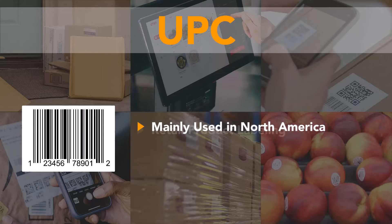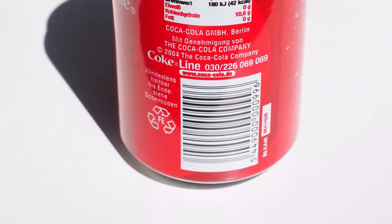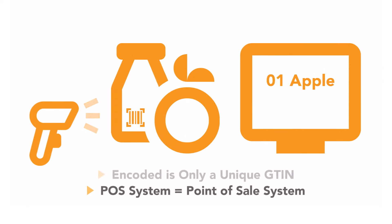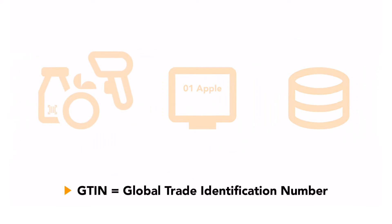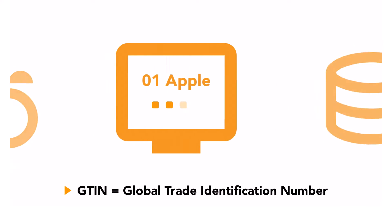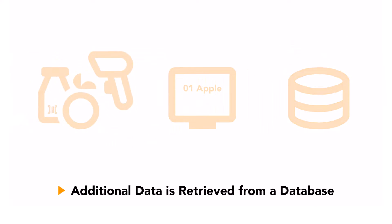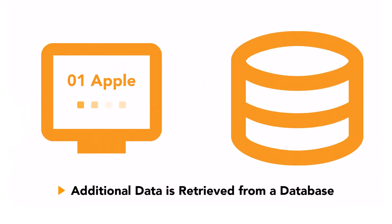For retail product labeling, EAN and UPC codes are predominantly used. These codes are scanned by the POS system, like the scanner at a supermarket. Encoded is only a unique product identification — the GTIN, or Global Trade Identification Number. Any additional data, such as item description or price, is retrieved from the market's database by the POS system using this GTIN.